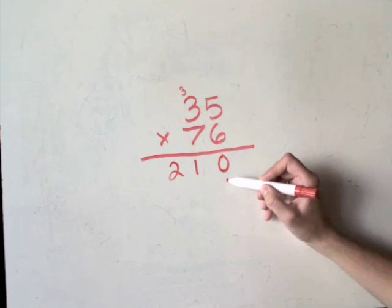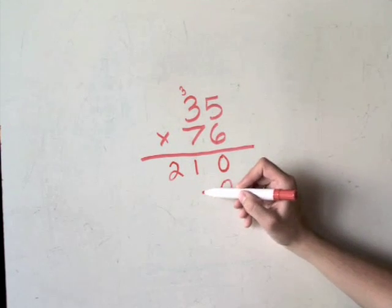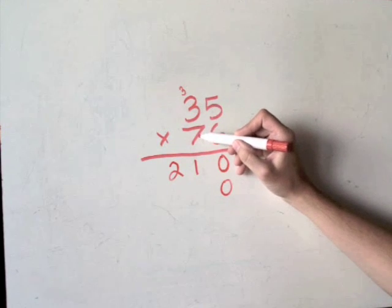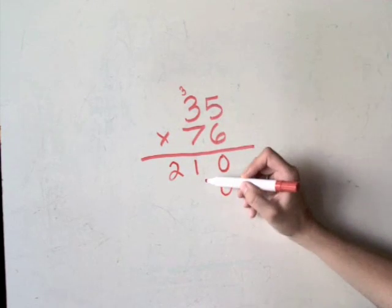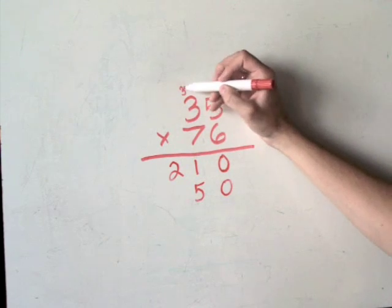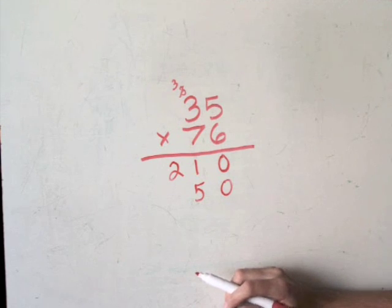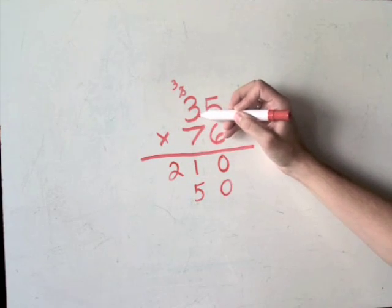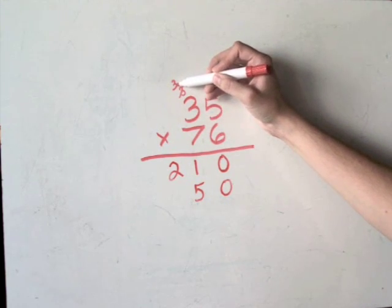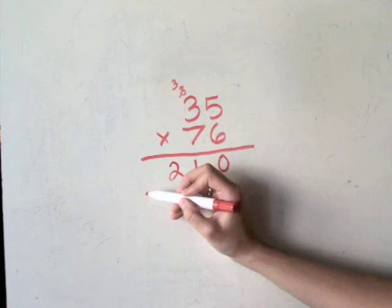Now when you start down here you have to put your 0 there so you can start over here. 7 times 5 is 35 so you put your 5 here and luckily we have the same number. 7 times 3 is 21. You multiply and then you add the 3 here. So you have 24.